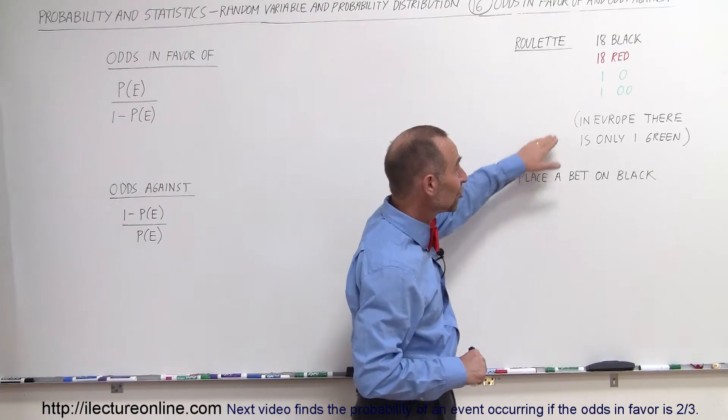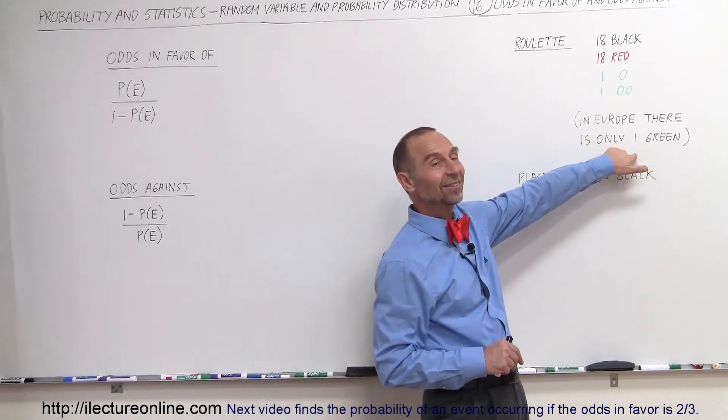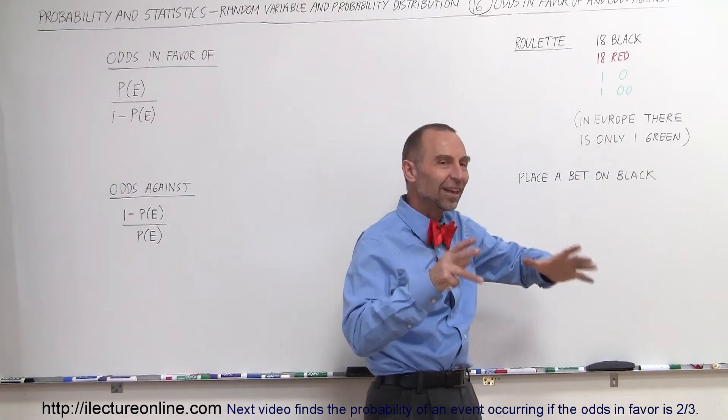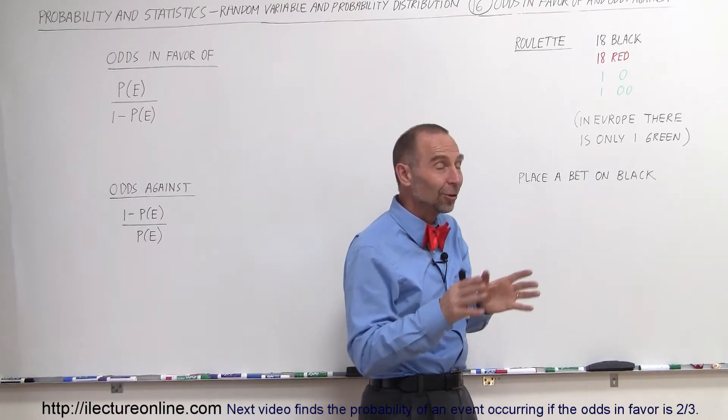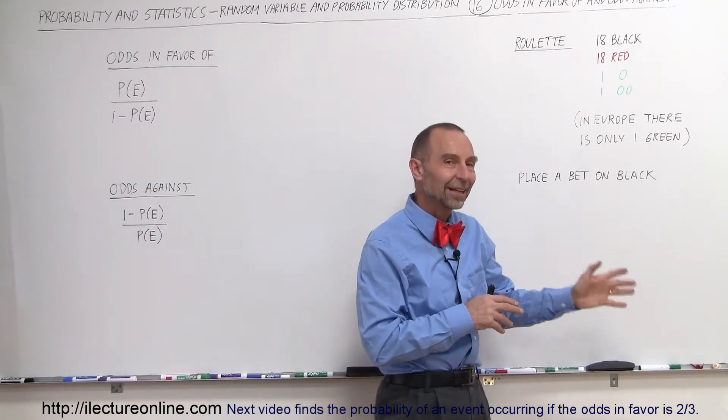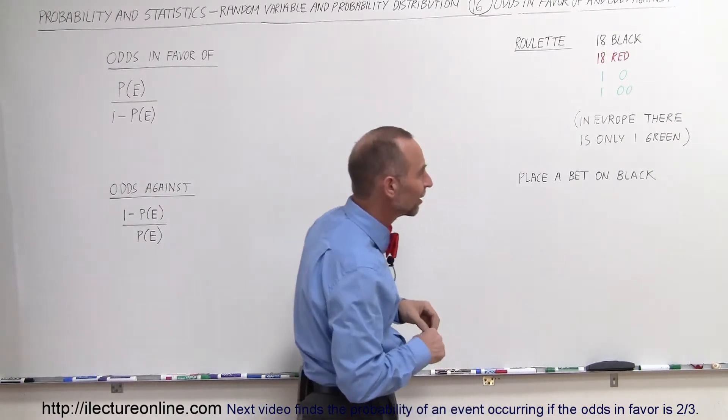It turns out in Europe there's only one of those green slots and so there's a total of 37 instead of 38 slots, so the bank doesn't win as much on that roulette game as we do here in the United States.